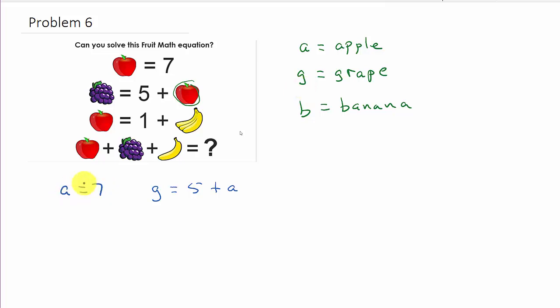Well, we know A is equal to 7, so that means G is equal to 5 plus 7, so G is equal to 12.